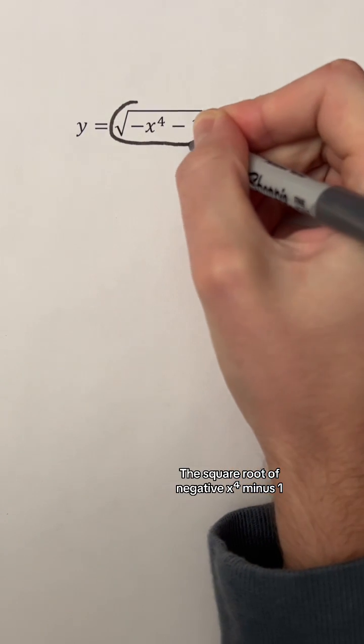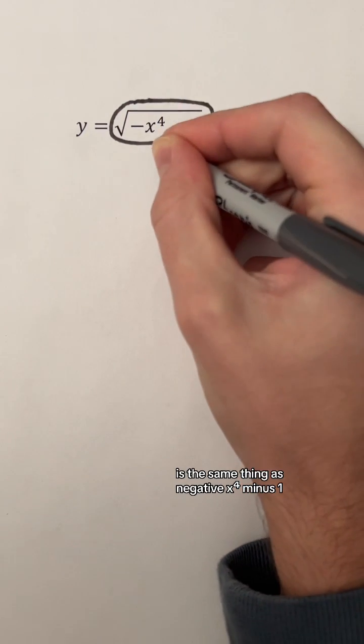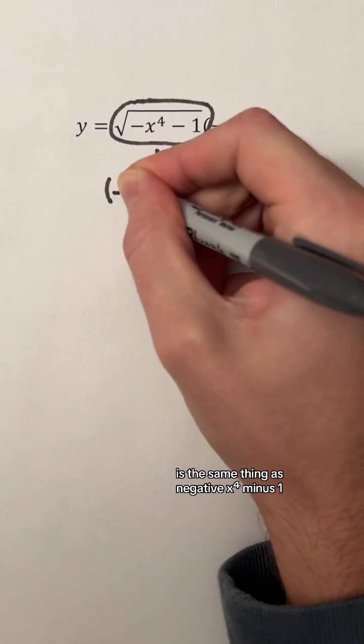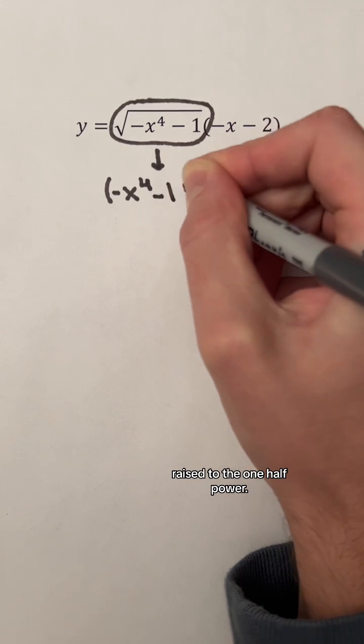Let's look at the fourth function. The square root of negative x to the fourth power minus 1 is the same thing as negative x to the fourth power minus 1 raised to the one-half power.